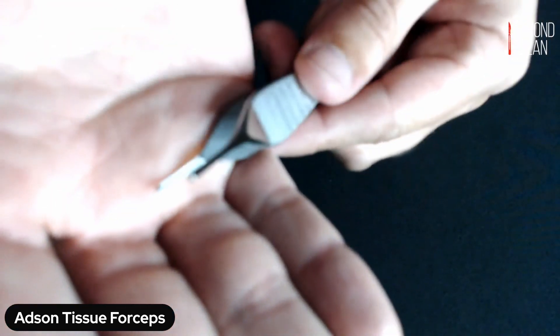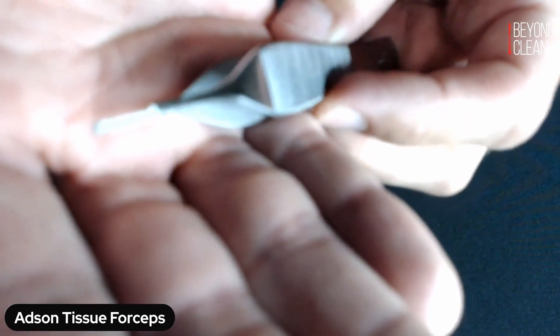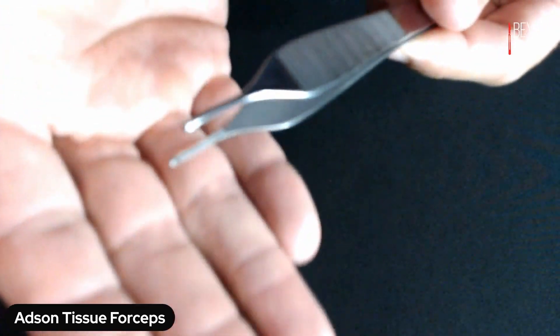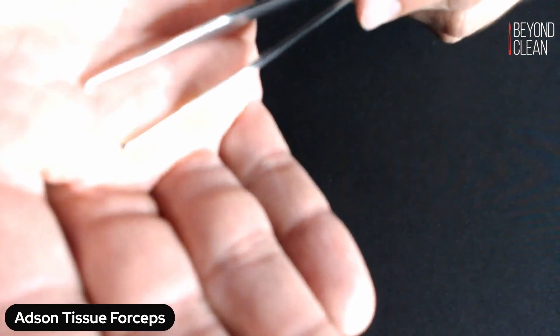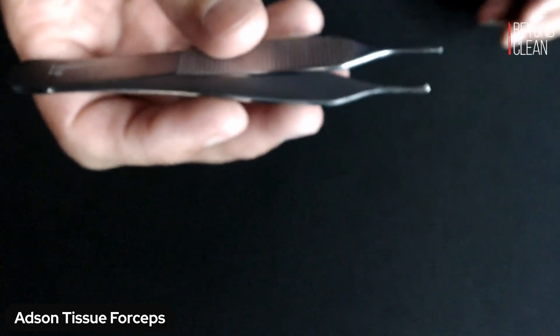And depending on your facility, sometimes they will just call them Adson tissue forceps. Sometimes you will have Adson with teeth and that's the tip off there. Again, this is a normal Adson with teeth, nothing too special about it.